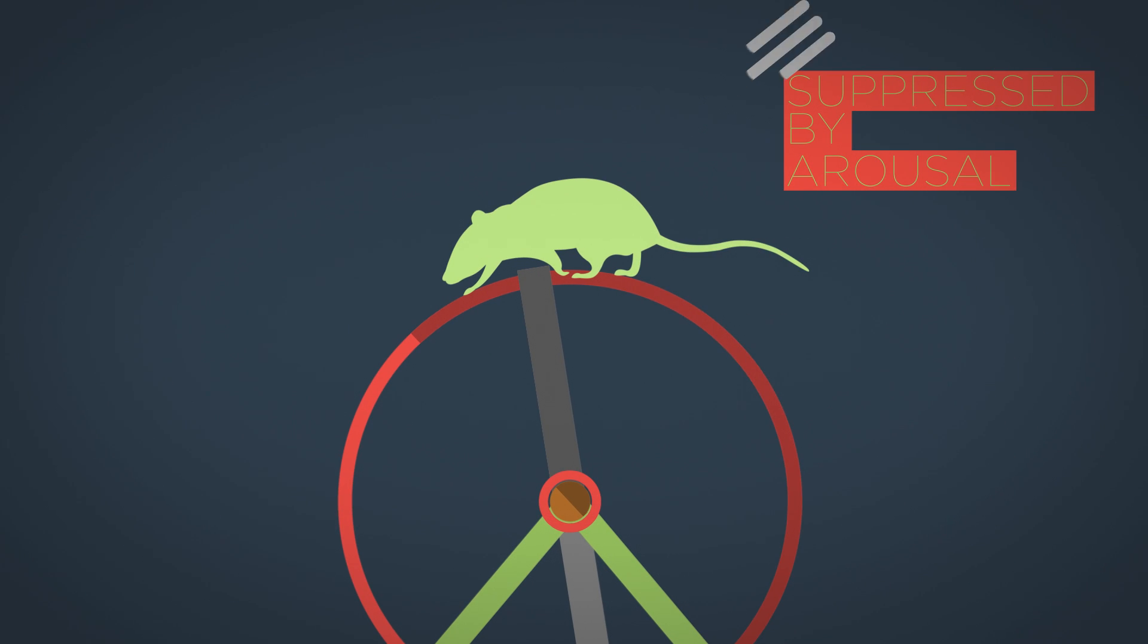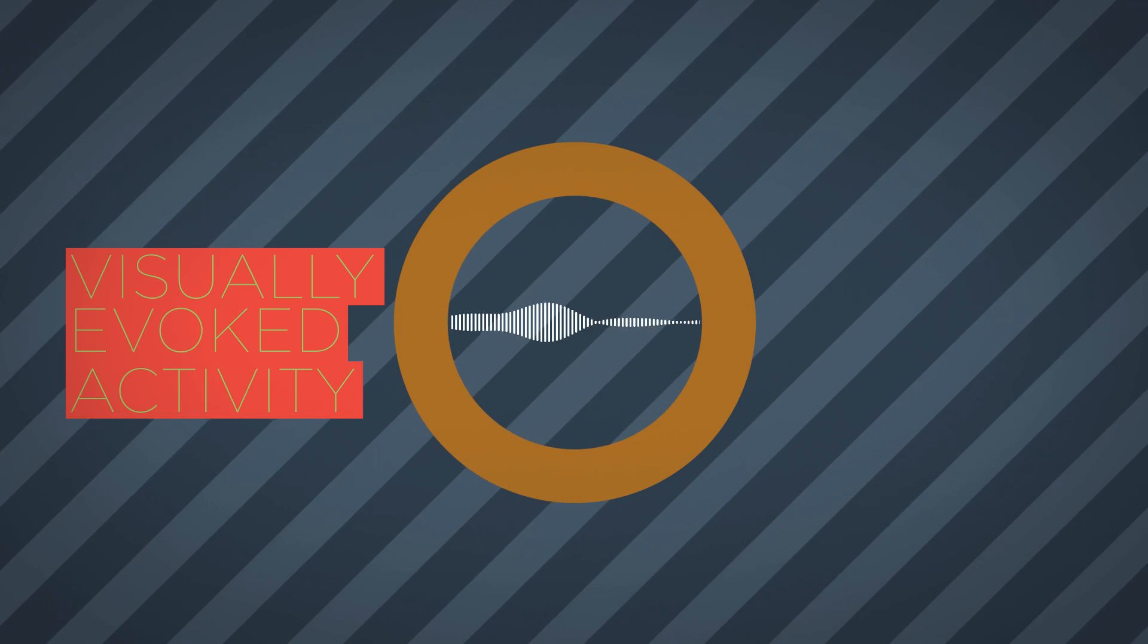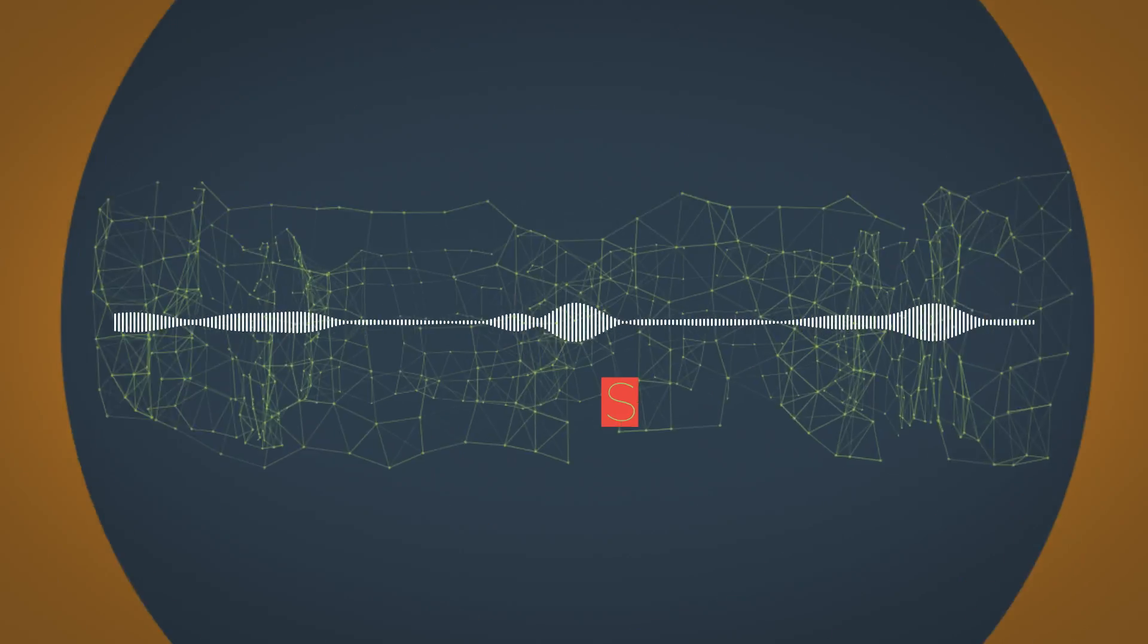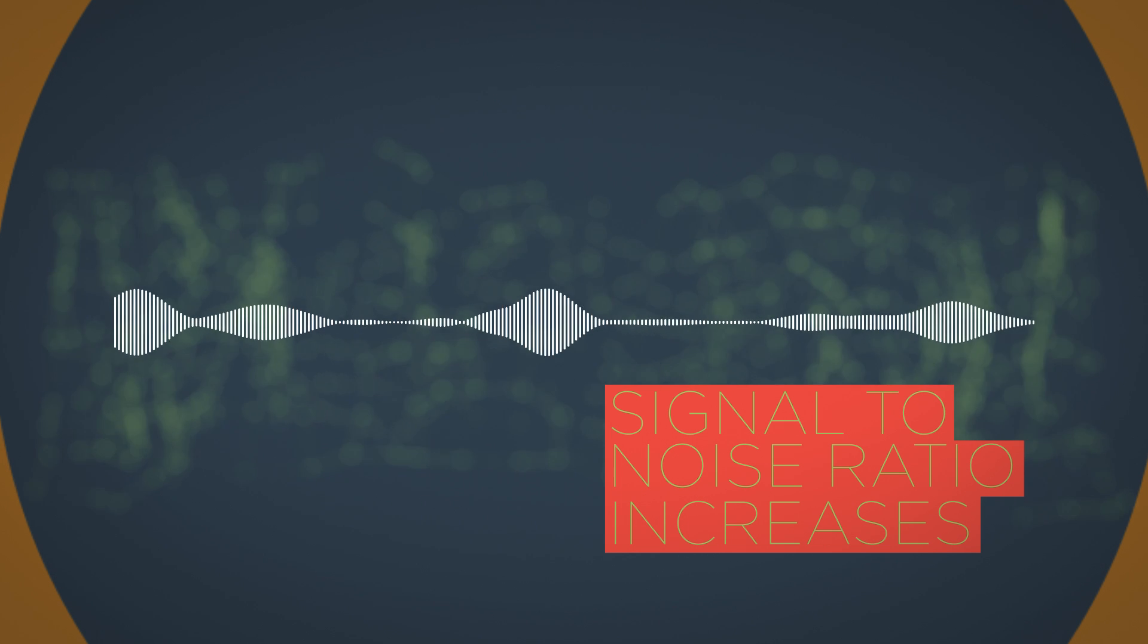Remember that spontaneous brain activity got suppressed by arousal. Interestingly, we find that visually evoked activity does not get suppressed by arousal. We conclude that the signal-to-noise ratio of visual responses increases.